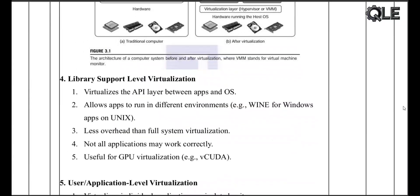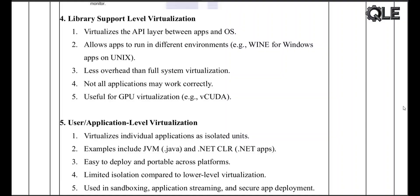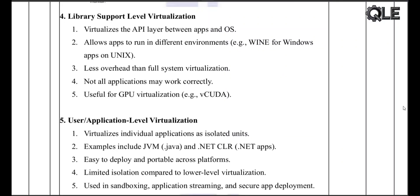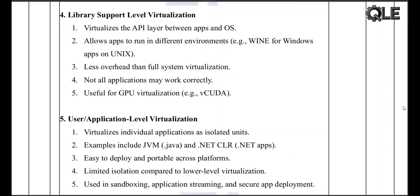Now we're getting into something more specific: library support level virtualization. This means virtualizing at the API level between your app and the OS. One example is Wine, which lets you run Windows apps on Linux. It's lightweight with less overhead than full virtualization, but not all apps work perfectly — some may crash or behave unexpectedly.